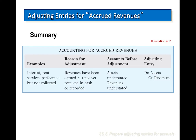In summary, when accounting for accrued revenues, examples include interest, rent, and services performed but not collected. The reason we do it is because revenues have been earned but not yet received in cash or recorded. The accounts before adjustment have assets understated and revenues understated. The adjusting entry is to debit assets and credit revenues.